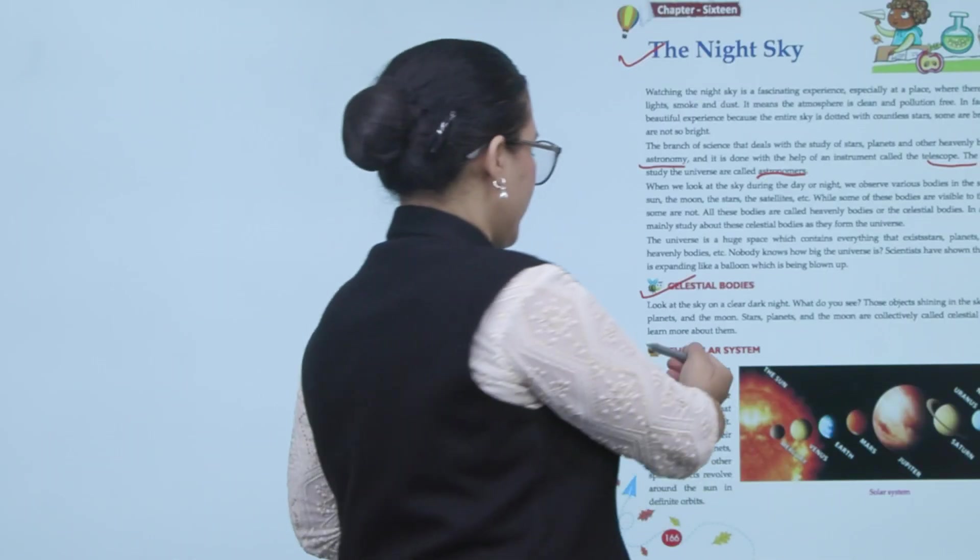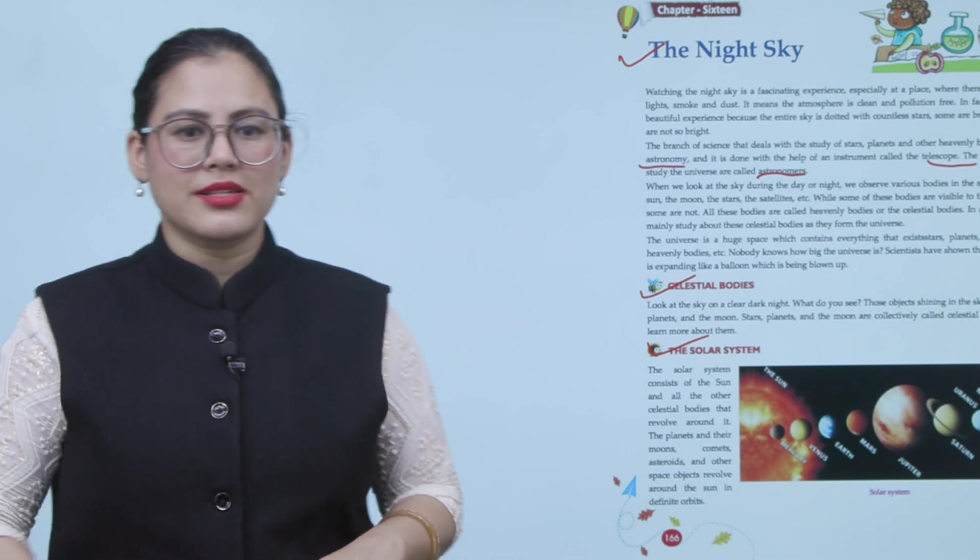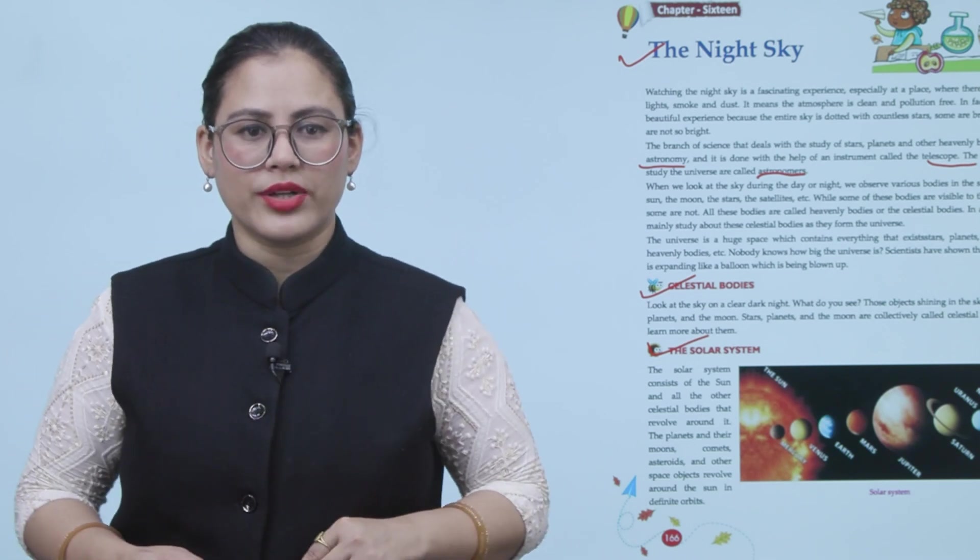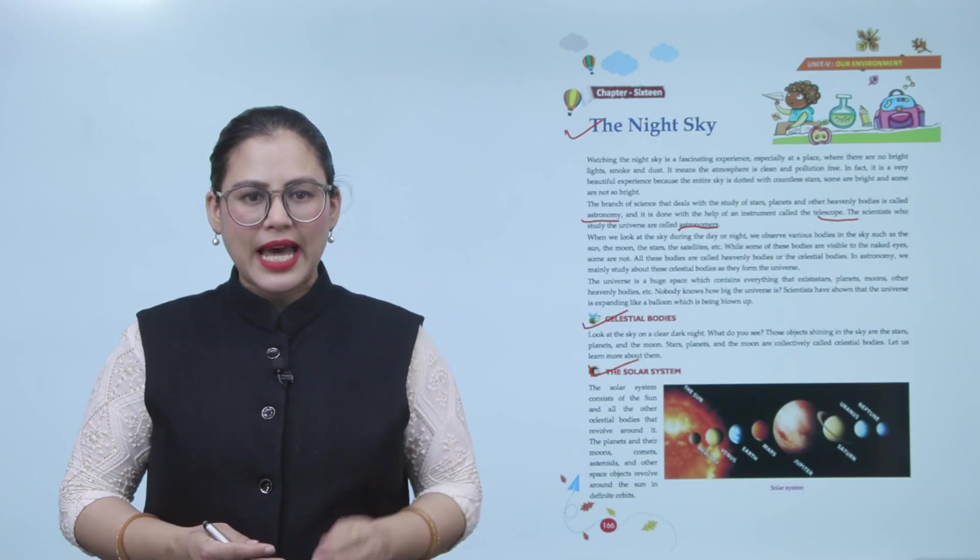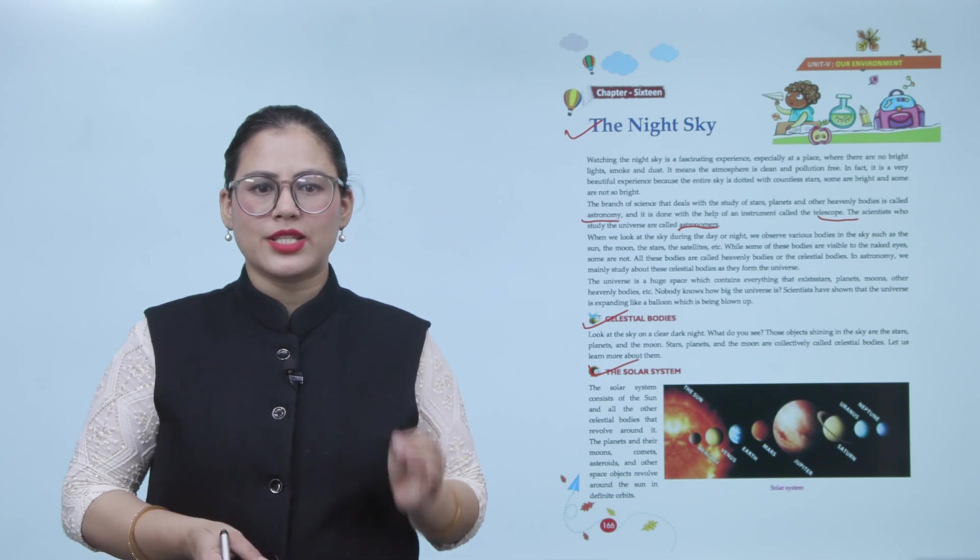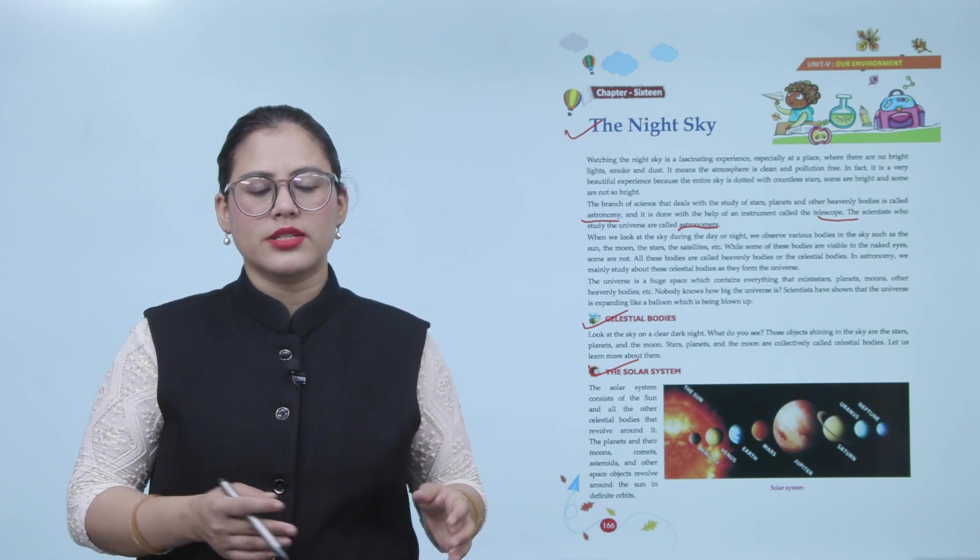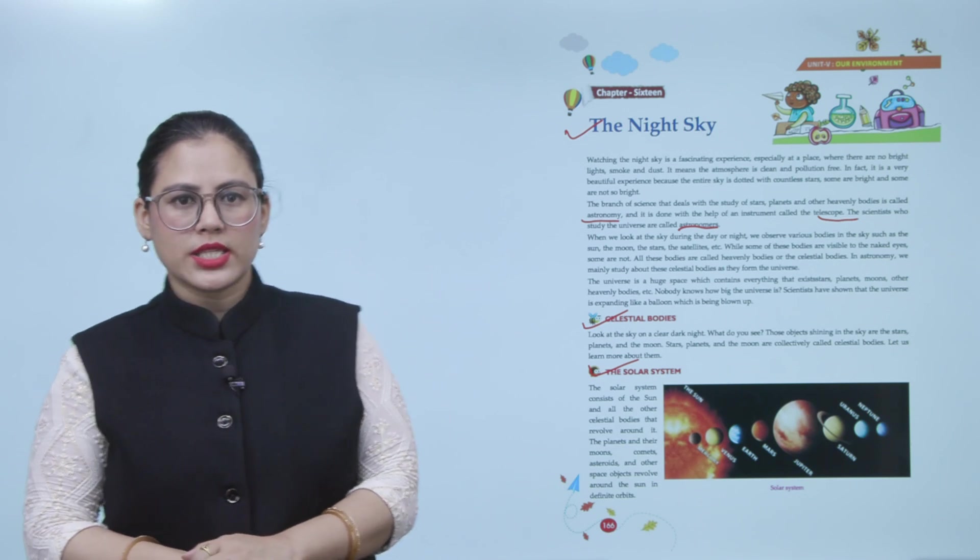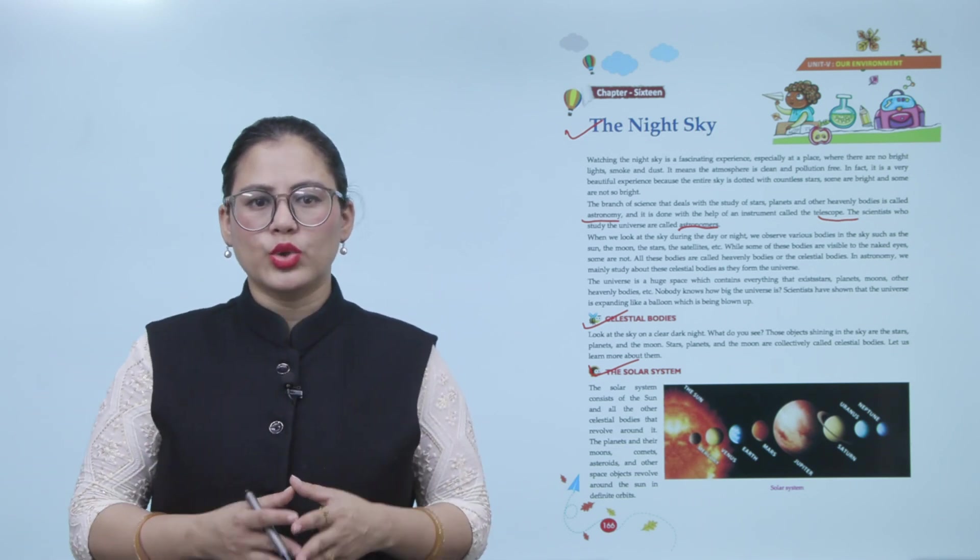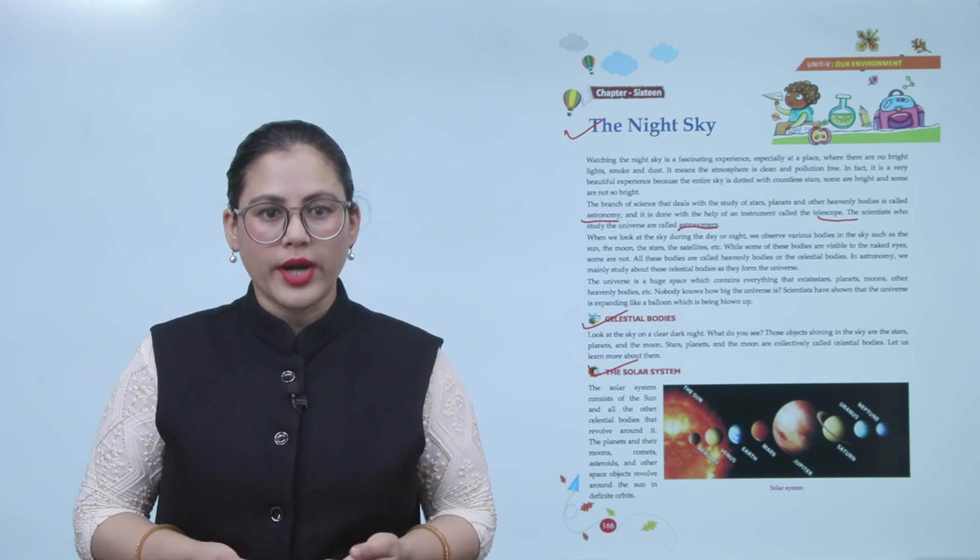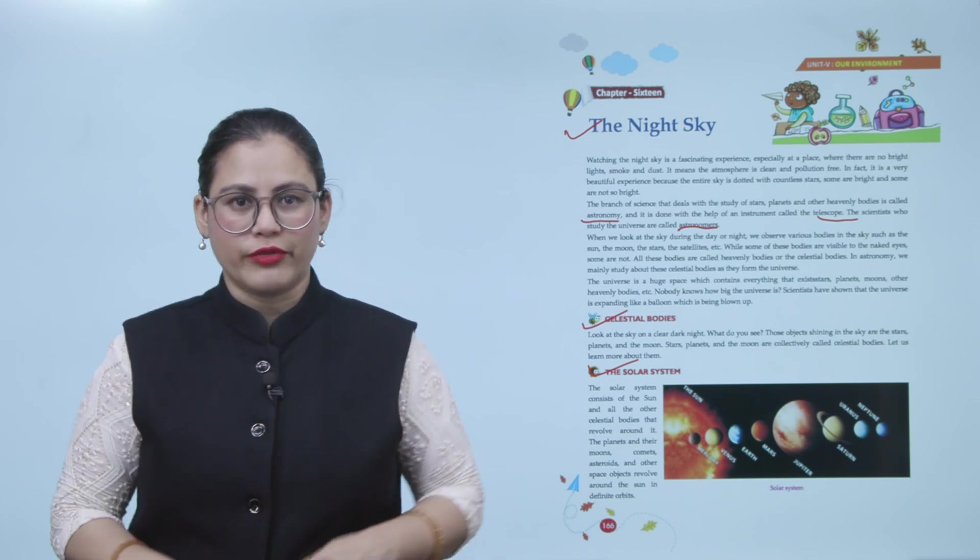The solar system. The solar system consists of the sun and all other celestial bodies that revolve around it. The planets and the moons, comets, asteroids, and other space objects revolve around the sun in definite orbits. The solar system includes the sun and all the celestial bodies that revolve around it.